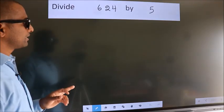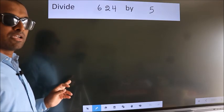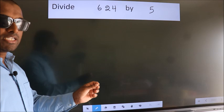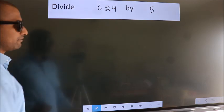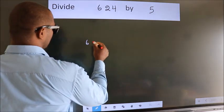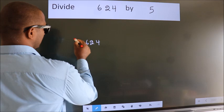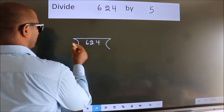Divide 624 by 5. To do this division we should frame it in this way. 624 here, 5 here.